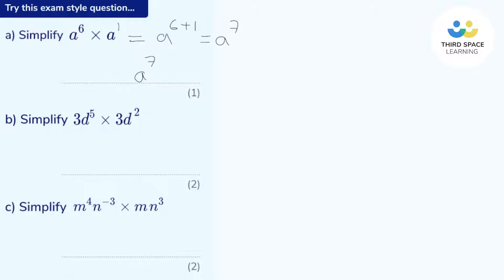Part B — pause the video and have a go, see how you get on. Okay, let's go through this one. So this has a little more going on. We've got three multiplied by d to the power of five, multiplied by three multiplied by d squared. Now because this is multiplication, I can multiply these in any order I want. So let's do the numbers first — three times three is nine.